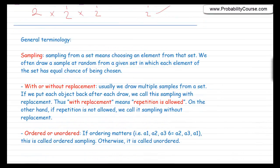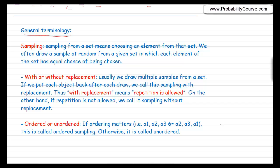Here I need to introduce some terminology. The general scenario is: I have a set and I want to choose elements from it at random — we refer to this as sampling. Sampling means choosing elements from a set. We often draw a sample at random from a given set where each element has the same or equal chance of being chosen. Sampling can be with or without replacement. If I pick a marble from a bag and put it back before taking the second sample, this is called sampling with replacement, meaning repetition is allowed. Sampling without replacement means repetition is not allowed.